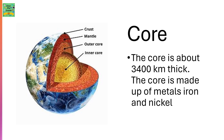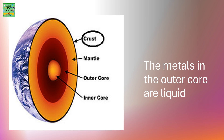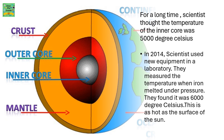The last layer is the core. The core is about 3400 km thick and is made of metals like iron and nickel. The metals in the outer core are liquid. For a long time, scientists thought that the temperature of the inner core was 5000 degrees Celsius. But in 2014, scientists used new equipment in the laboratory and measured the temperature when iron melted under pressure. They found it was 6000 degrees Celsius — as hot as the surface of the sun.